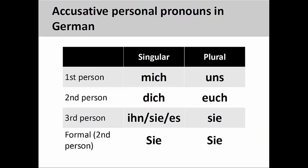Like English, accusative personal pronouns in German are organized by number, person, and gender: mich, first-person singular; dich, second-person singular; ihn, masculine third-person singular; sie, feminine third-person singular; es, neuter third-person singular; uns, first-person plural; euch, second-person plural; and sie, third-person plural. The formal personal pronouns, both singular and plural, is Sie, which has a capitalized first letter.